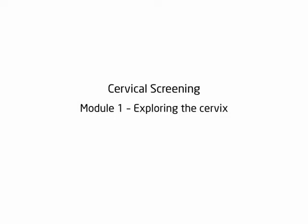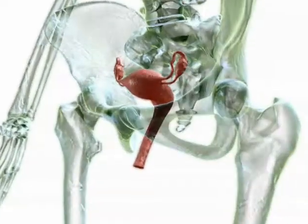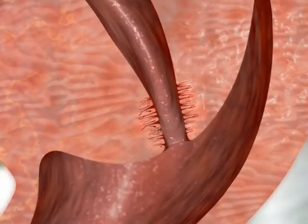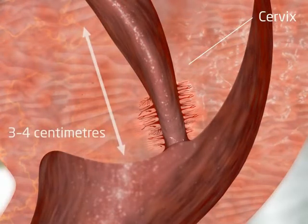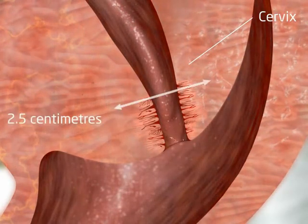Module 1. Exploring the Cervix. The cervix is the neck of the womb and is located at the lower end of the uterus, which is connected to the vagina. It is cylindrical in shape and is approximately 3 to 4 cm long and 2.5 cm in diameter.